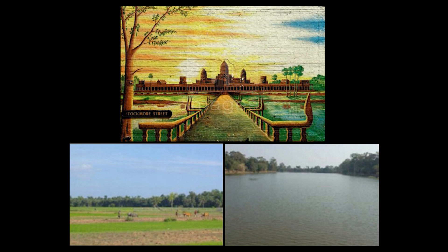But for a human observer, the gradients in the path and temple — the unique objects in this scene — are more important than the sky. However, it is very difficult for the computer to make this reasoning to find good matches.